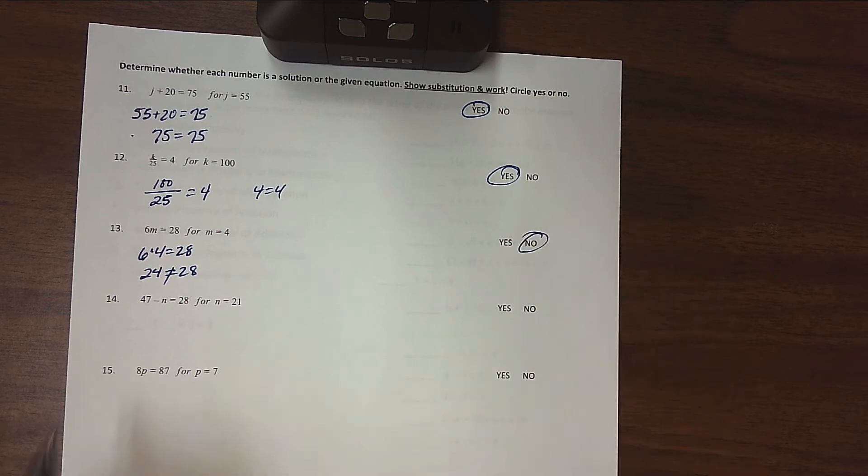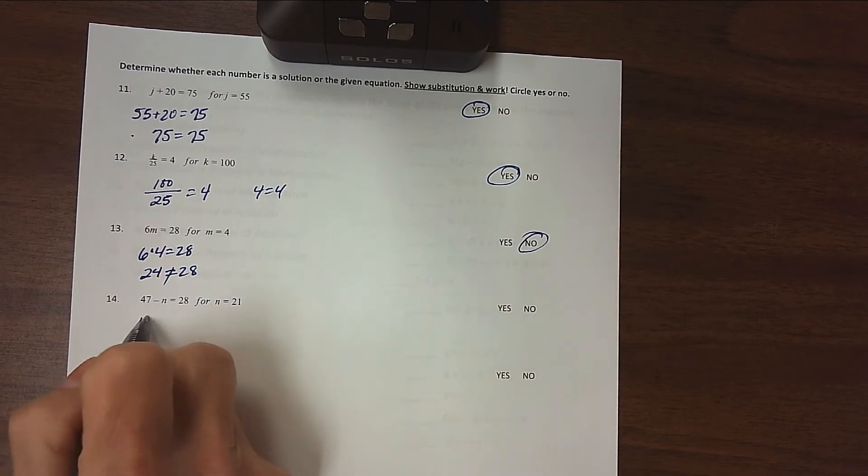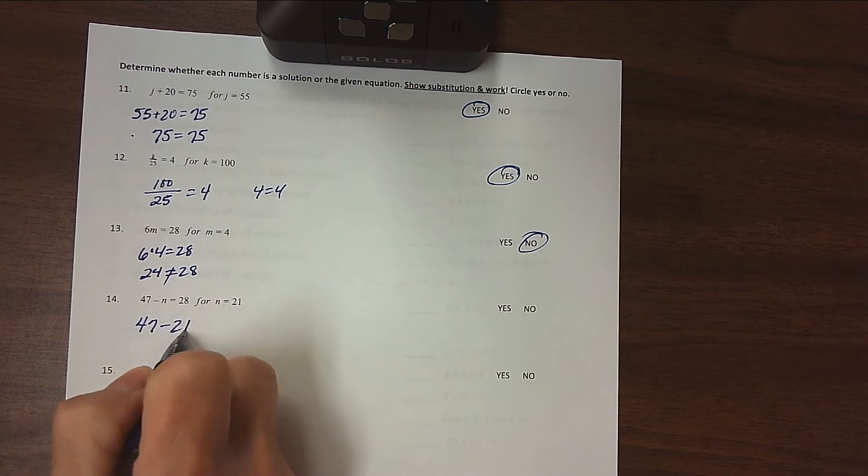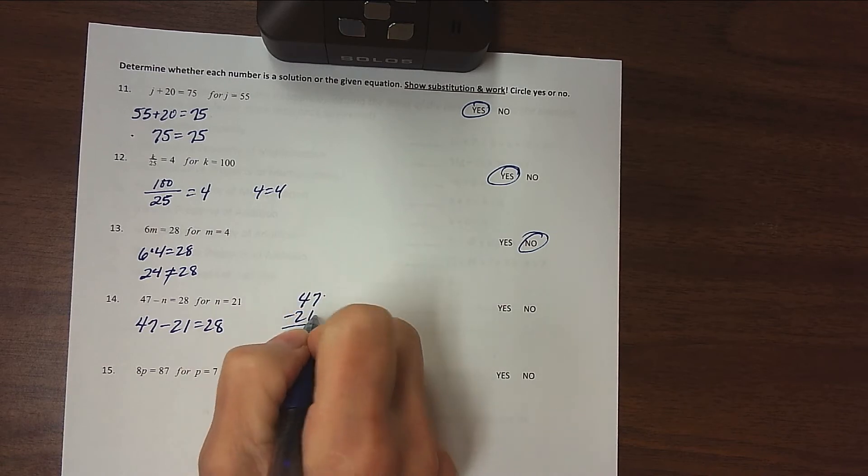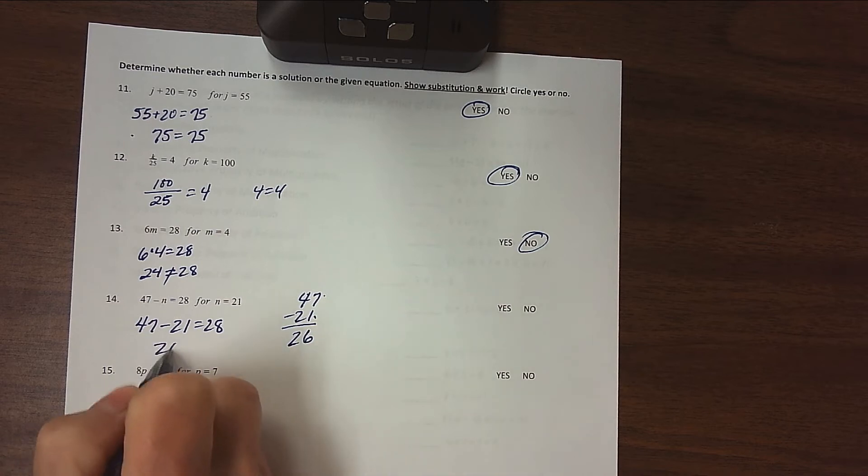So that's a no. 47 minus n equals 28. If we replace the n with 21, does 47 minus 21 equal 28? 7 minus 1 is 6, and 4 minus 2 is 2. So 26 does not equal 28.